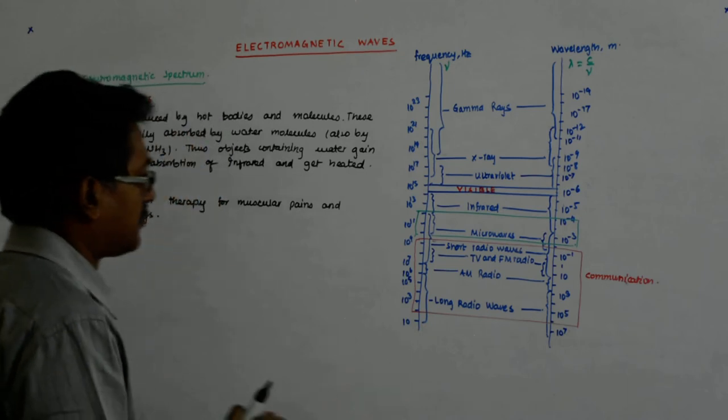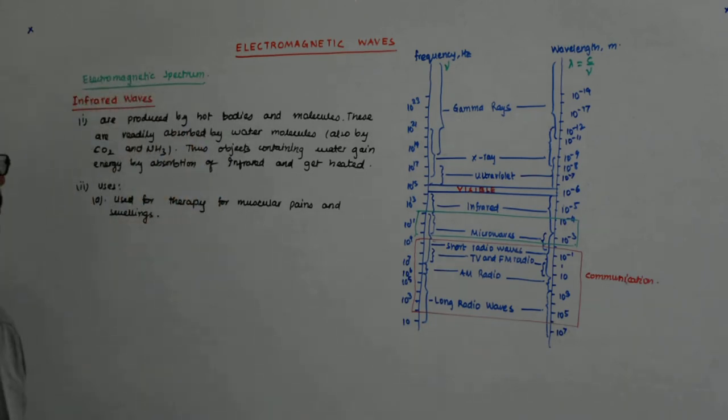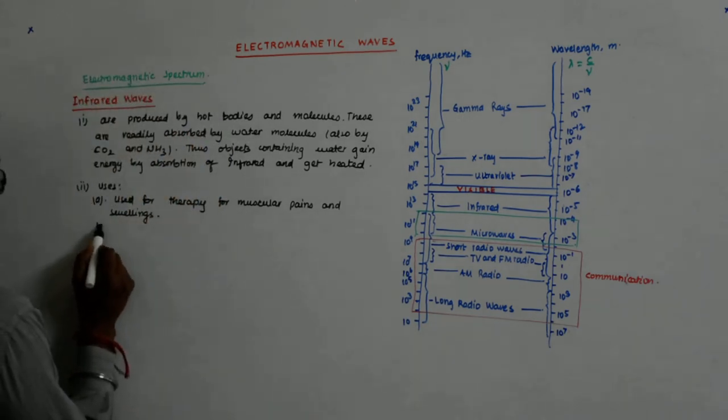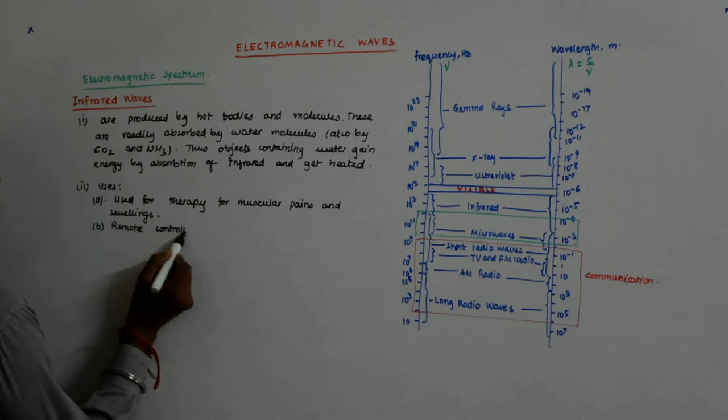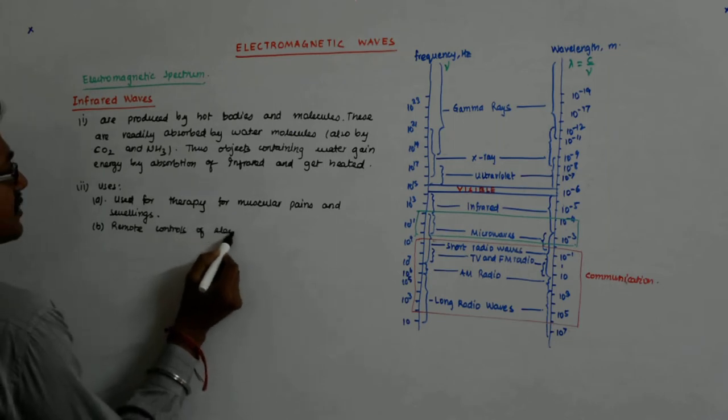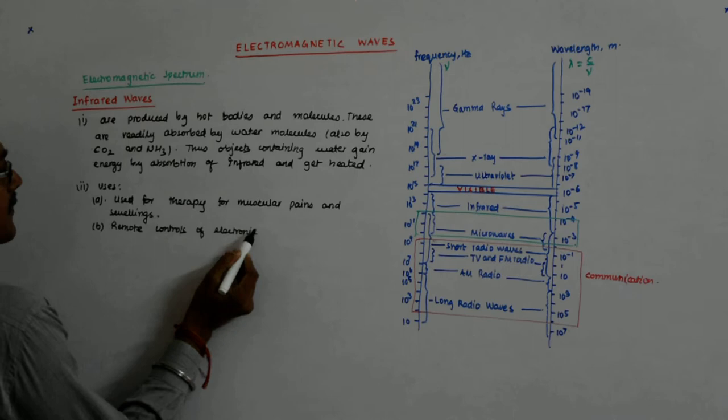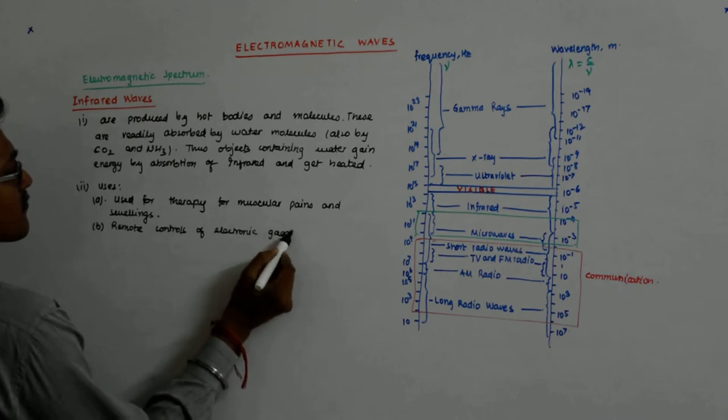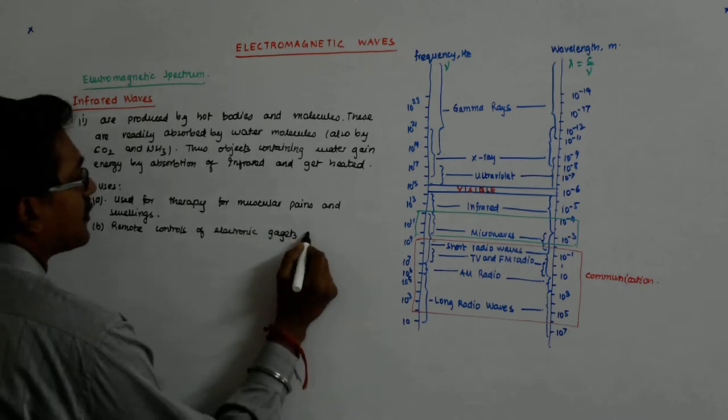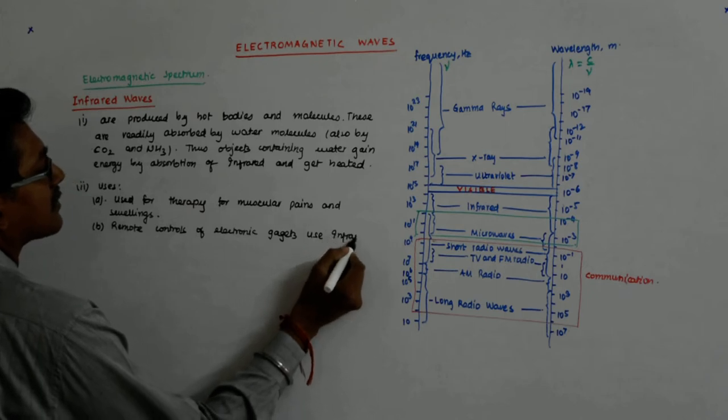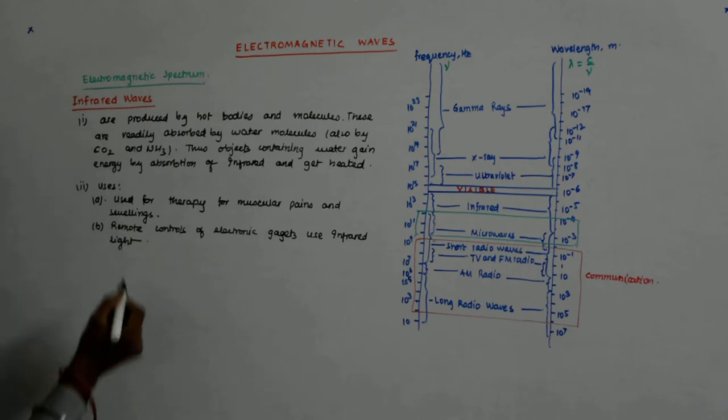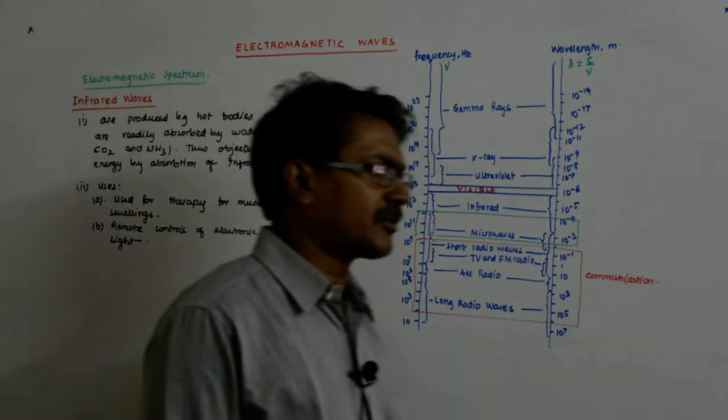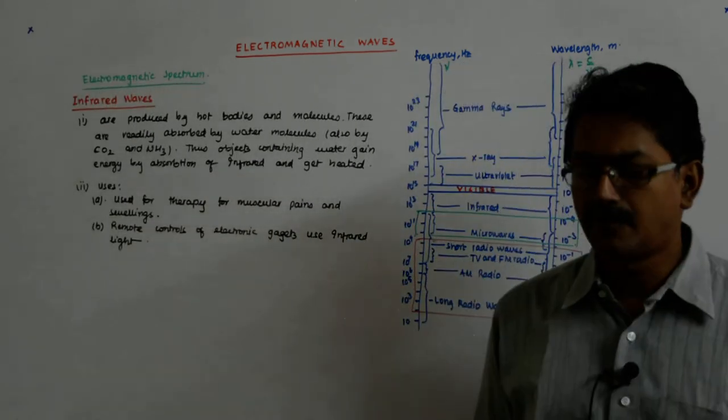The second very important application is the remote controls of electronic gadgets. They use infrared light. It is not visible to us and still does the job.